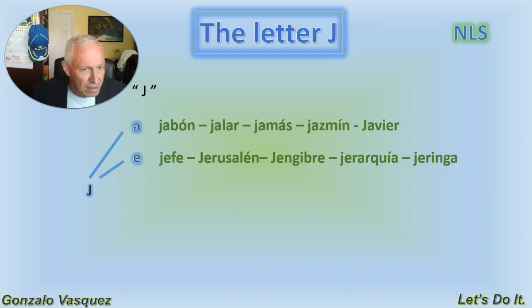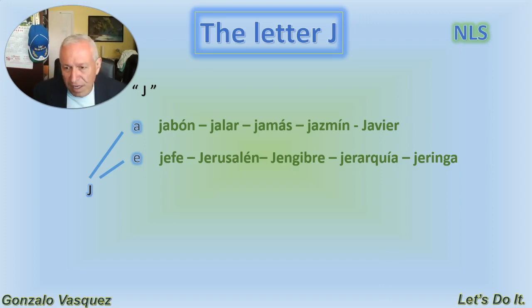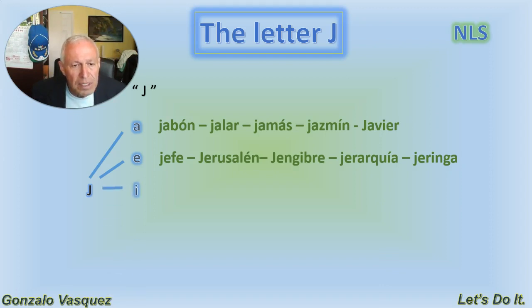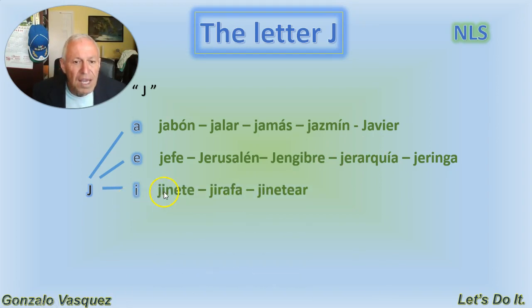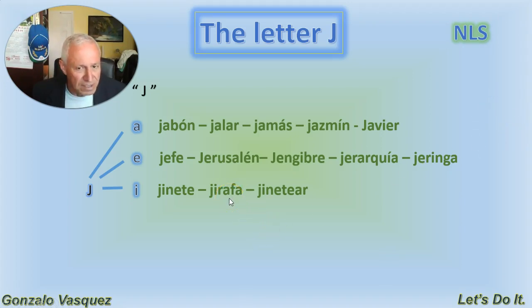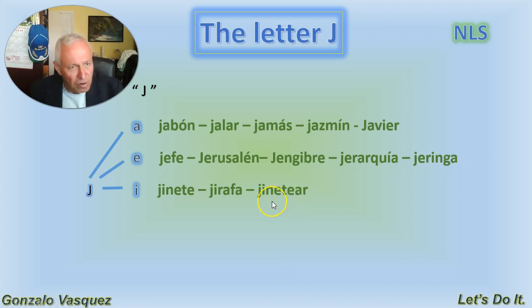With 'je': jerarquía means hierarchy in English, and jeringa — a jeringa is the syringe that they use to give shots. With the letter I, the sound is 'ji.' Jinete is the one who rides horses. Jirafa is a giraffe, same as in English. Jinetear is the action of riding on top of a horse.